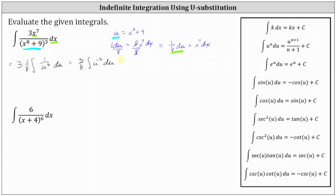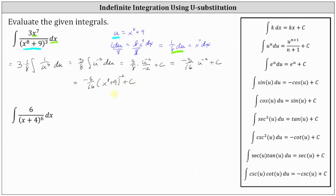In this form, we can apply the power rule of integration, which gives us three eighths times u to the power of negative three plus one, which is negative two, divided by negative two, plus c. Simplifying in terms of u, we have negative three sixteenths u to the power of negative two plus c. Now we need to write this back in terms of x, where u is equal to x to the eighth plus nine. So in terms of x, we have negative three sixteenths times the quantity x to the eighth plus nine raised to the power of negative two plus c.